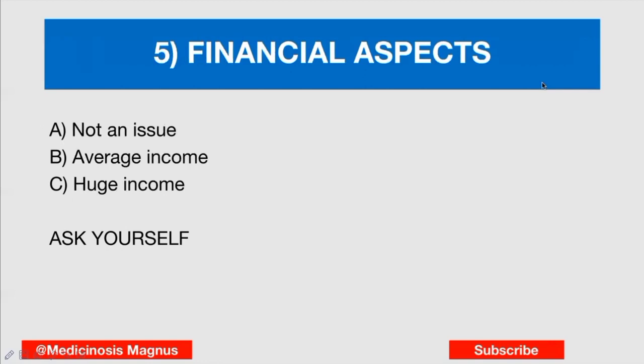The final consideration is financial aspects, which is very important. If finances are not a concern, you can choose any branch. For average to good income, specialties like anesthesia, general surgery, and general medicine are very good. If you want above-average or very good income, then neurosurgery, interventional cardiology, dermatology, and orthopedics are great choices. But if you are skilled and work honestly, you can earn very good money in any specialty.